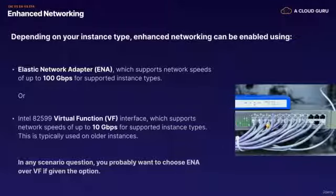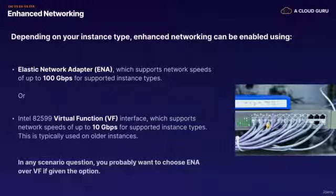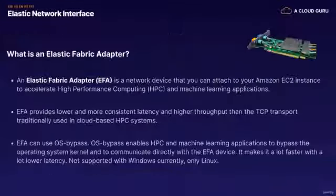Most of the time exam questions will describe an EC2 instance doing extreme network workloads needing something like 50 gigabits per second, and ask whether you should use an ENI, multiple ENIs, or an Elastic Network Adapter. The answer is the Elastic Network Adapter, because it's built for those speeds. Adding more and more ENIs won't necessarily speed up your network throughput.